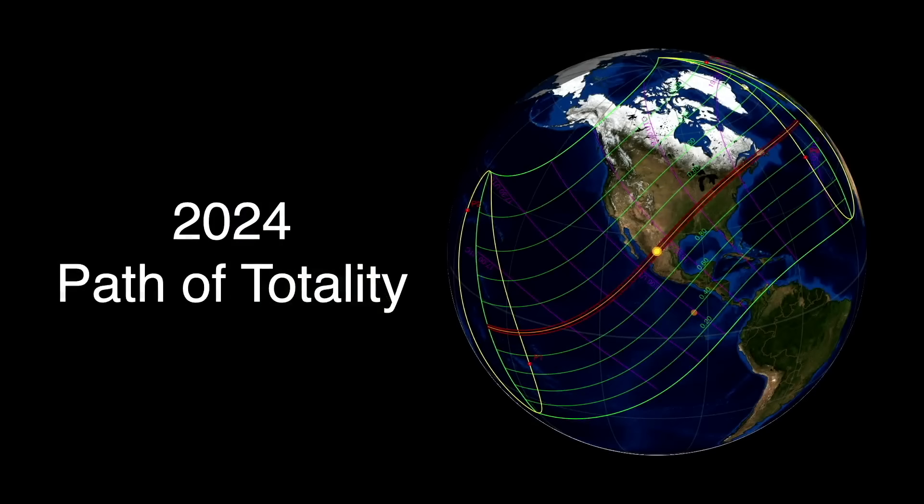To see the full total eclipse, you'll need to be within the path of the shadow, somewhere within the red line on this diagram, also called the path of totality.